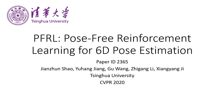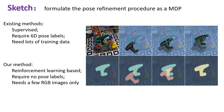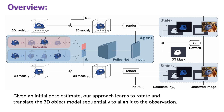Hello, everyone. 6D pose estimation from a single RGB image is a challenging and vital task in computer vision. We propose a reinforcement learning-based method to refine a rough pose estimation without the need of 6D pose labels.